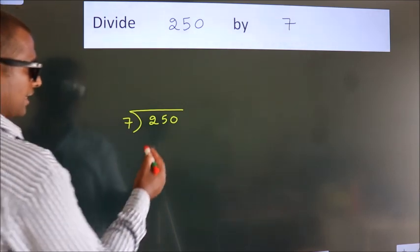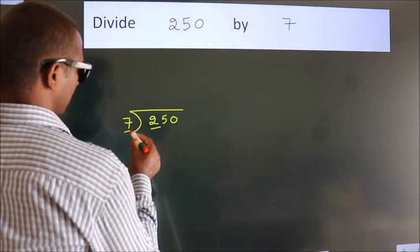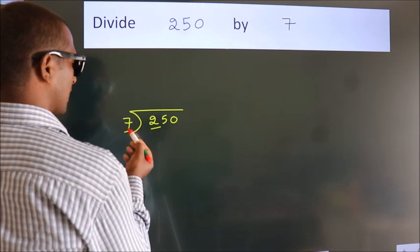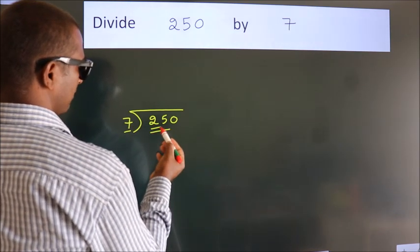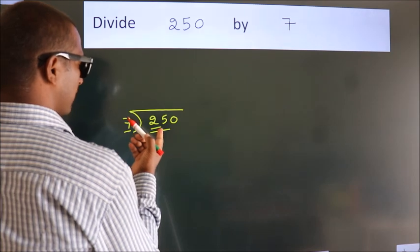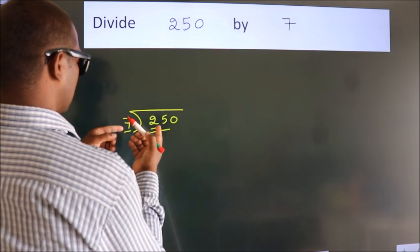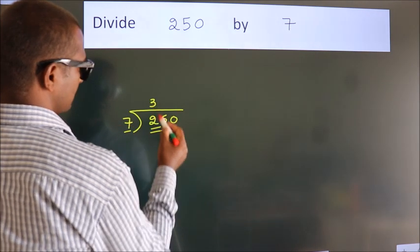Next. Here we have 2, here 7. 2 is smaller than 7, so we should take 2 numbers, 25. A number close to 25 in the 7 table is 7 threes, 21.